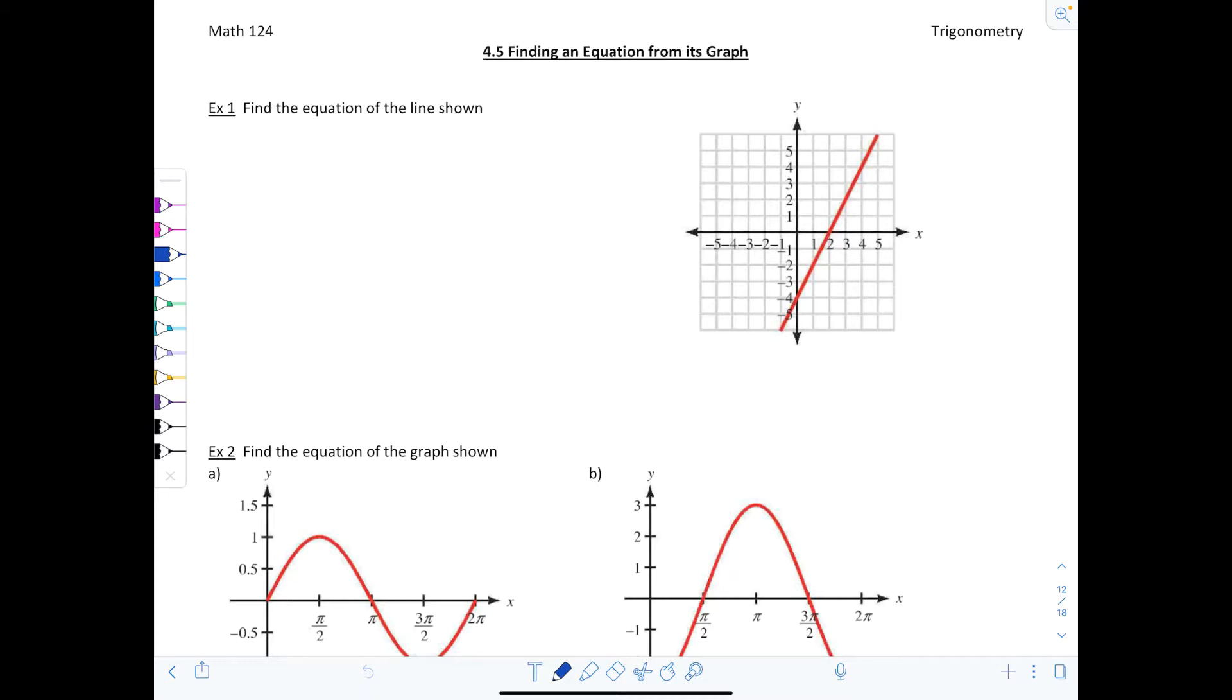If I were to show you a picture right here, the graph of a line and ask you to find its equation, what you would start off by doing is thinking, okay, what is the standard form for the equation of a line? Usually you think of slope-intercept form. And can I identify the key features, namely M and B, by looking at this graph?